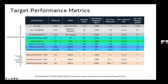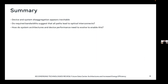Just quickly summarizing: device and system disaggregation appears inevitable for the reasons of power that we talked about. Given the required bandwidths we're trying to deliver, does that suggest that all paths lead to optical interconnects? And how do system architectures and device performance need to evolve so that we can enable these? I'm going to try to come back and fill out that table in our panel discussion.